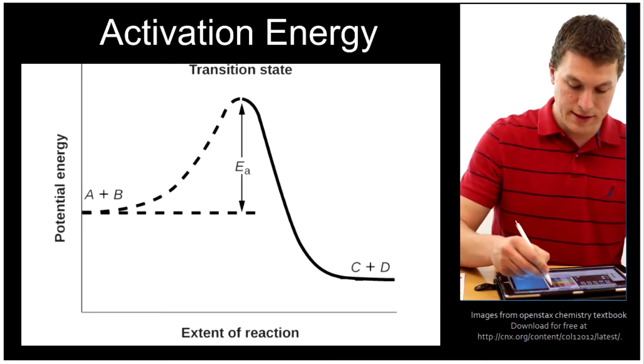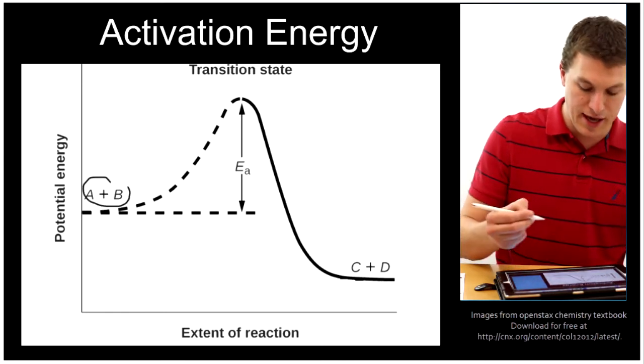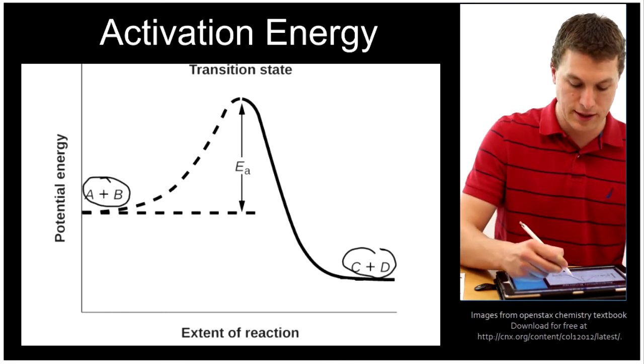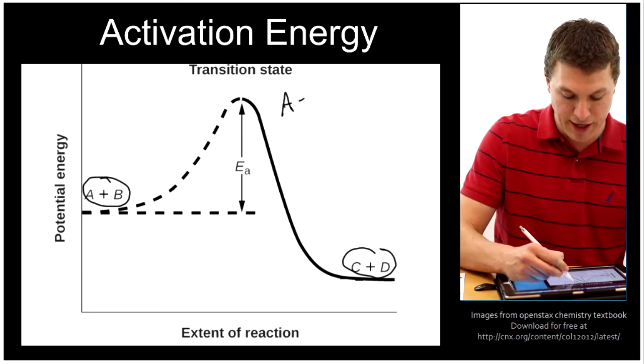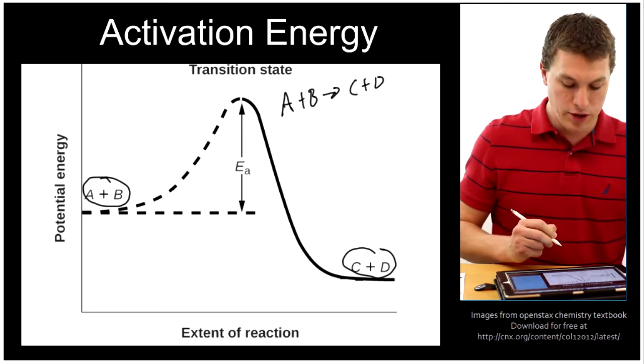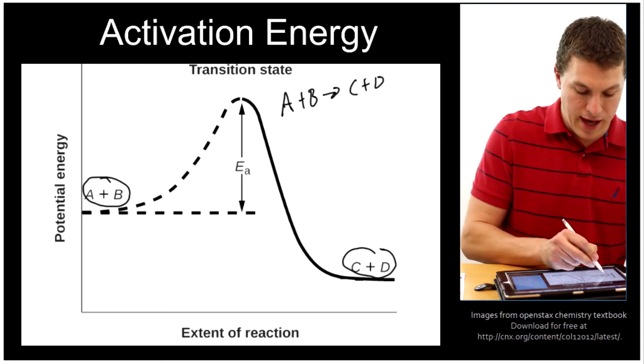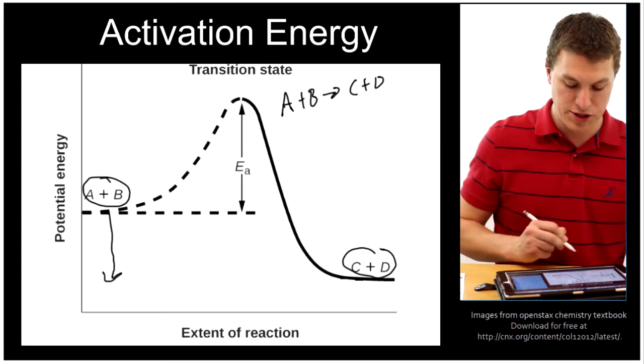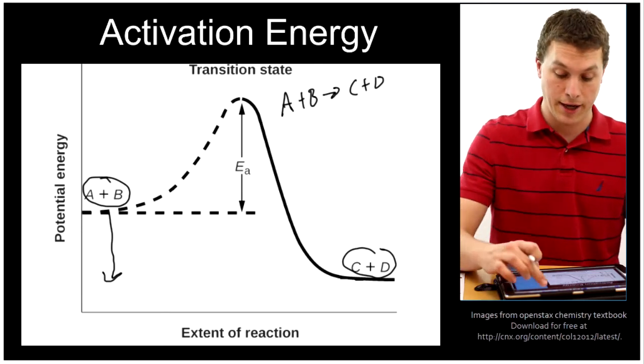You'll notice that in this case what we're doing is starting with the reactants A and B and going to the products C and D. So here we're thinking about this reaction A plus B goes to C plus D. And you'll notice first of all that A plus B drops in energy as we go down to C and D. So that makes it an exothermic reaction.